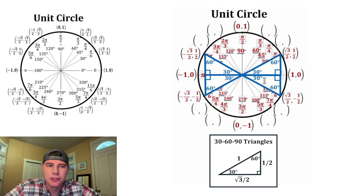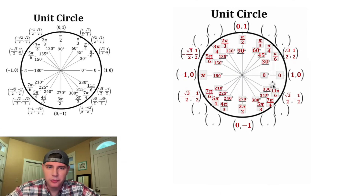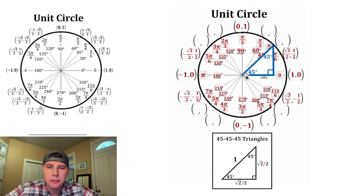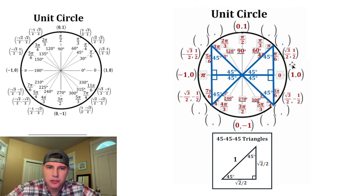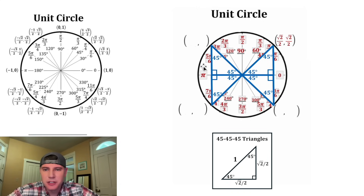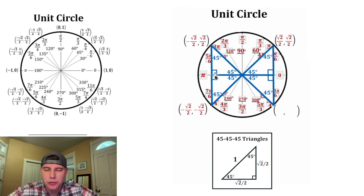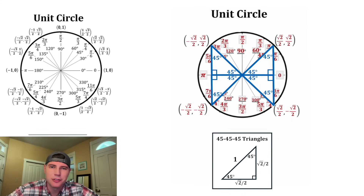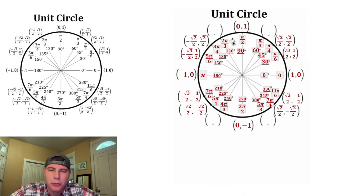Next let's go through the 45-degree points. Making this side equal to 1 gives us a 45-45-90 triangle with legs of root 2 over 2 and root 2 over 2. Bringing in all four 45-45-90 triangles: the first point is (root 2 over 2, root 2 over 2), the second is (-root 2 over 2, root 2 over 2), the third is (-root 2 over 2, -root 2 over 2), and the fourth is (root 2 over 2, -root 2 over 2).